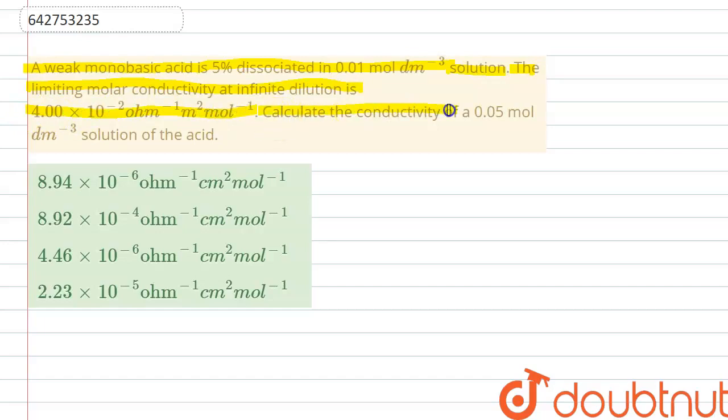Calculate the conductivity of 0.05 molar per decimeter cubed solution of the acid. Okay, so let's start by writing whatever is given to us.